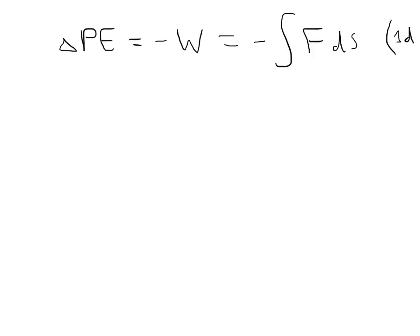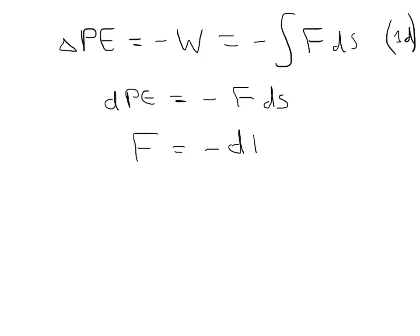This is all in one dimension for convenience. Taking the differential, we can say dPE is equal to minus F ds — the change in potential energy equals minus the force times the displacement. We can then rewrite this as an expression for the force: F equals minus dPE/ds, the derivative of potential energy with respect to position.